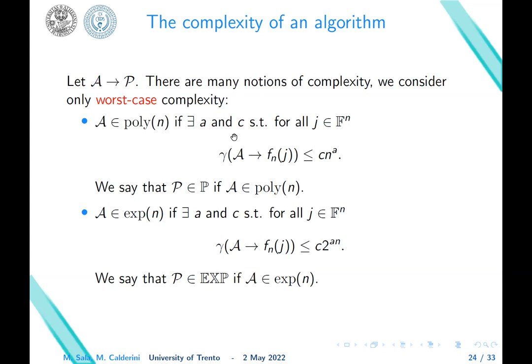What is the complexity of the decision problem? It's nothing else as the minimum of the complexity of all algorithms that solve P. We use this γ_A to denote the complexity of an algorithm. However, just a few notations. If you have an algorithm that solves P, you can consider the worst case complexity. We can look at just two classes of complexity. First, poly(n). An algorithm is poly(n) if the complexity of computing f_n(j) using A can be bounded by c·n^a, where n is the bit length and c and a are constants. So if A is in poly(n), then P itself we say is in P. Polynomial time problems.